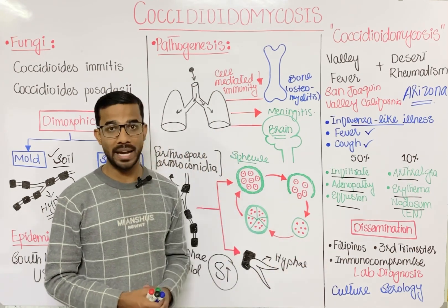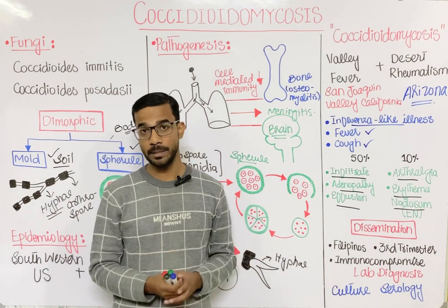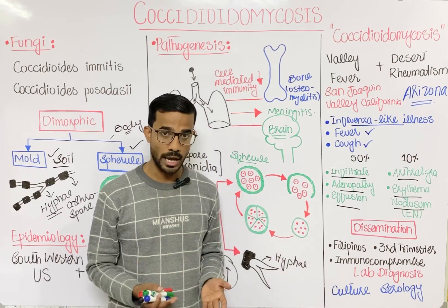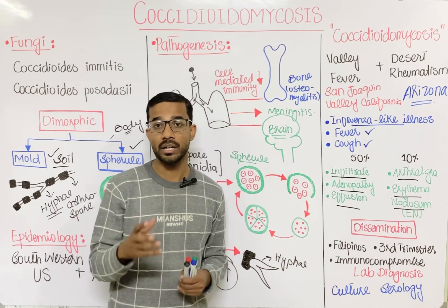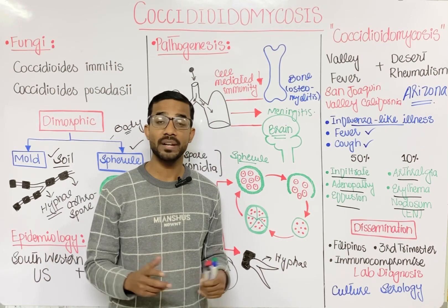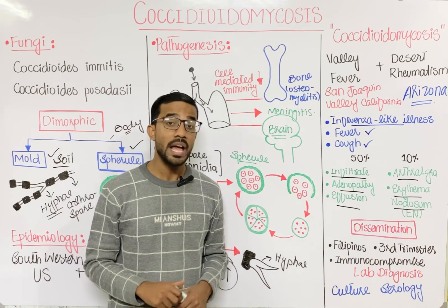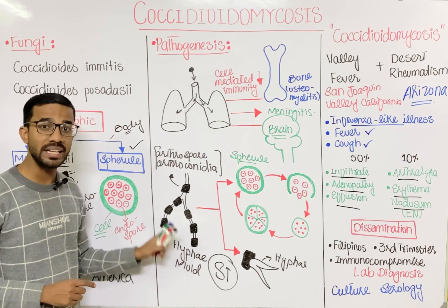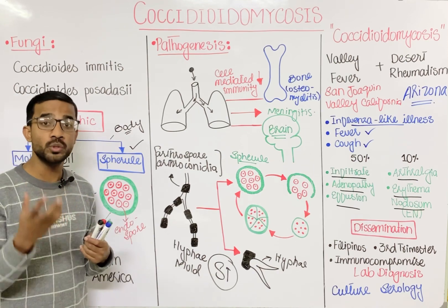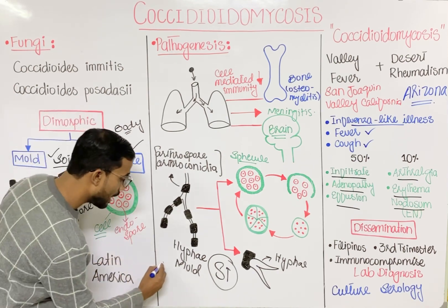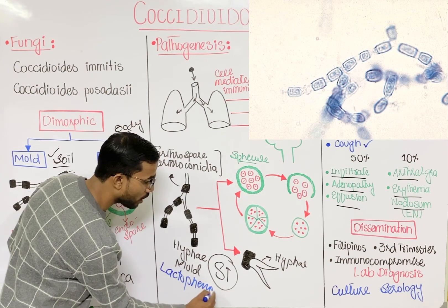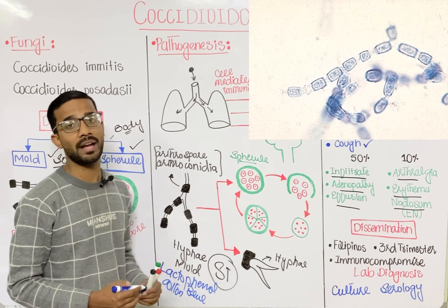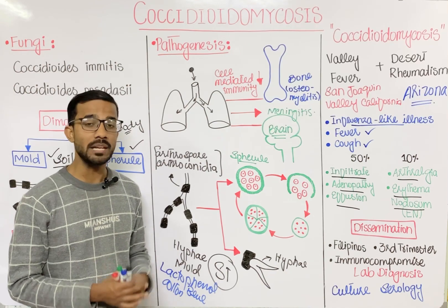For lab diagnosis, you can perform culture. The specific agar used is Sabouraud's agar at a temperature of 20 to 25 degrees Celsius. In culture, you will see hyphae. The stain used for microscopy is lactophenol cotton blue stain.